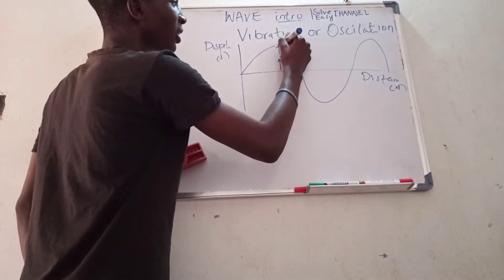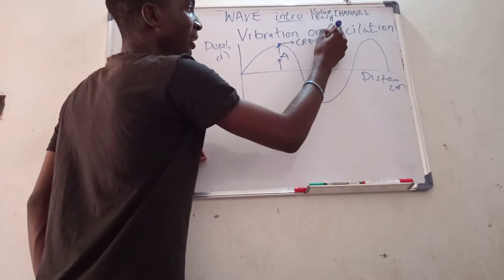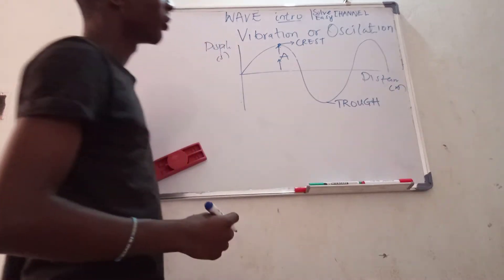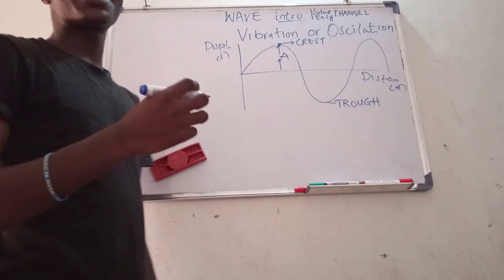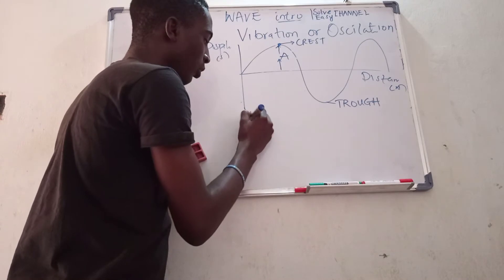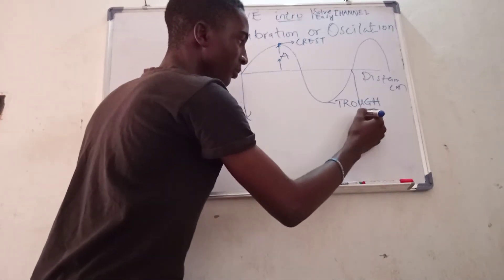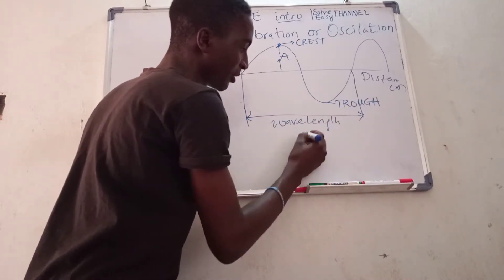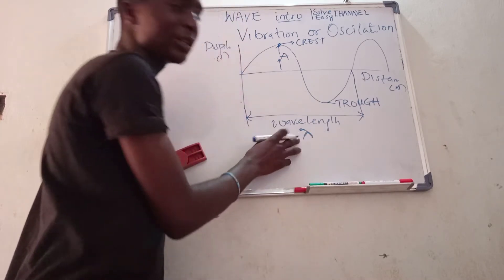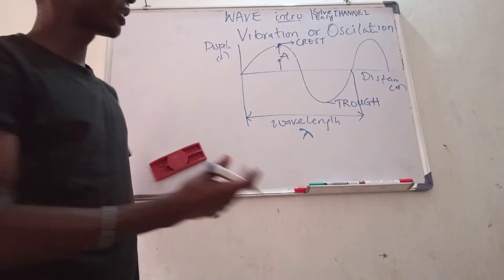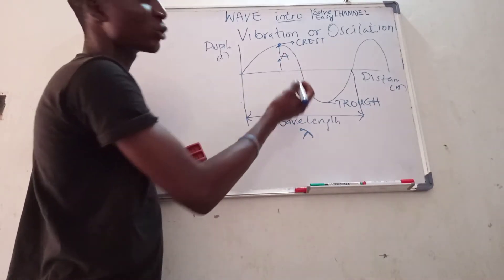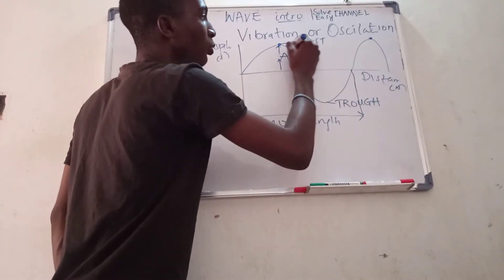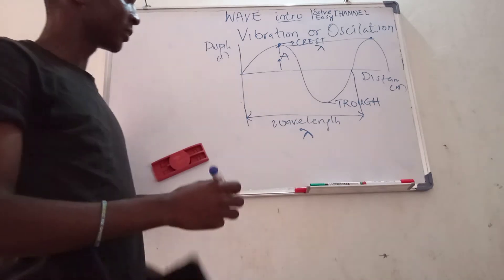And also at this point, we call this place my crest. And the opposite of crest is the trough. Now, the distance between one complete oscillation is called my wavelength, which can be identified with this sign called lambda. Or to get the wavelength, you can see the distance between one crest to another. So from this crest to this other crest is also my wavelength.